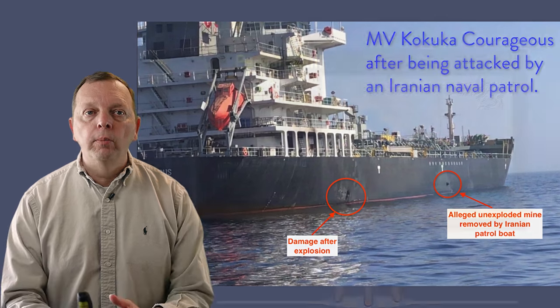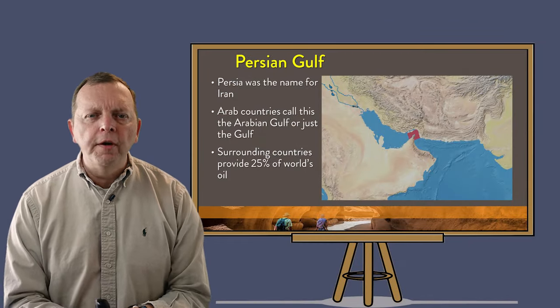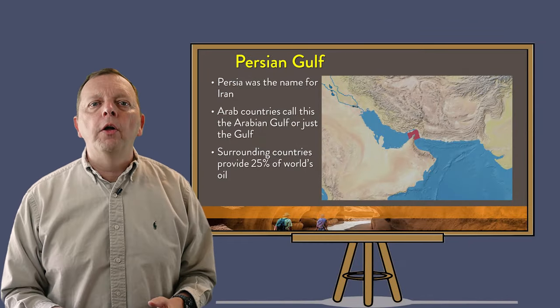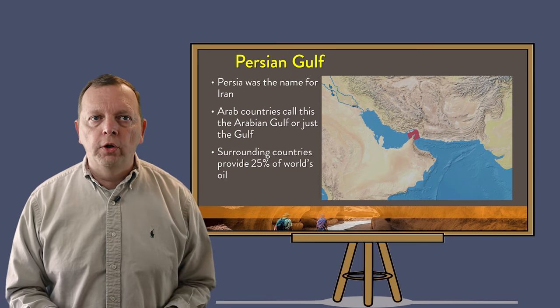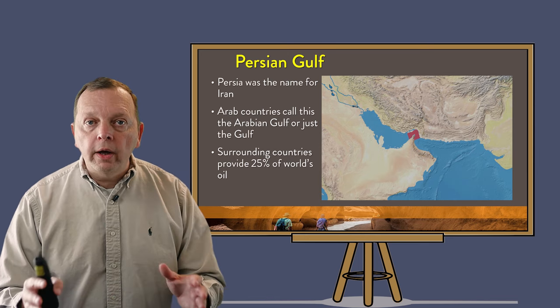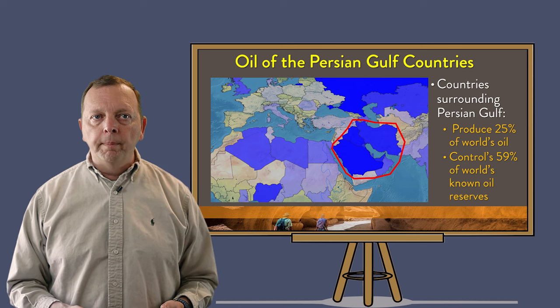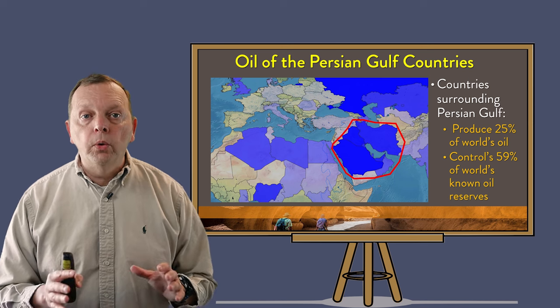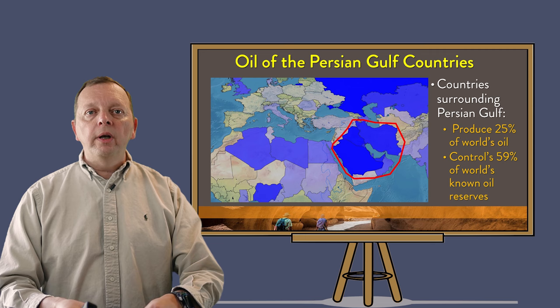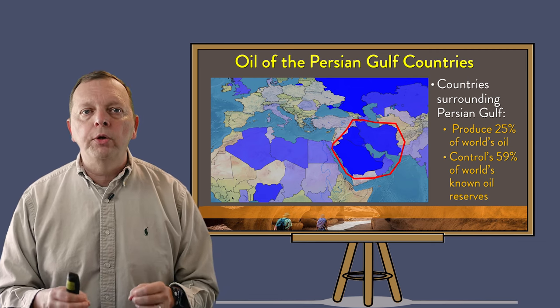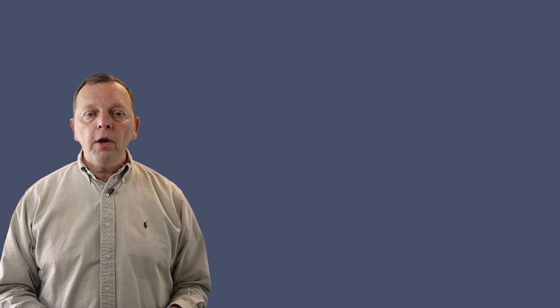Once through the Strait of Hormuz, we find ourselves in the Persian Gulf — though several Arab governments call it the Arabian Gulf, or just the Gulf. The countries surrounding the Persian Gulf account for over 25% of the world's oil, and nearly two-thirds of the world's known oil reserves are found in this region. This makes it extremely important to the world's economy, but it has also been the scene of many recent conflicts, including the 1991 Gulf War and the war in Iraq that started in 2003.